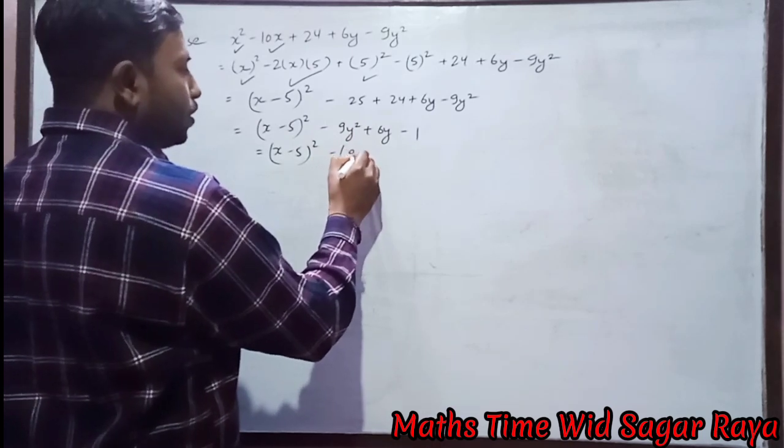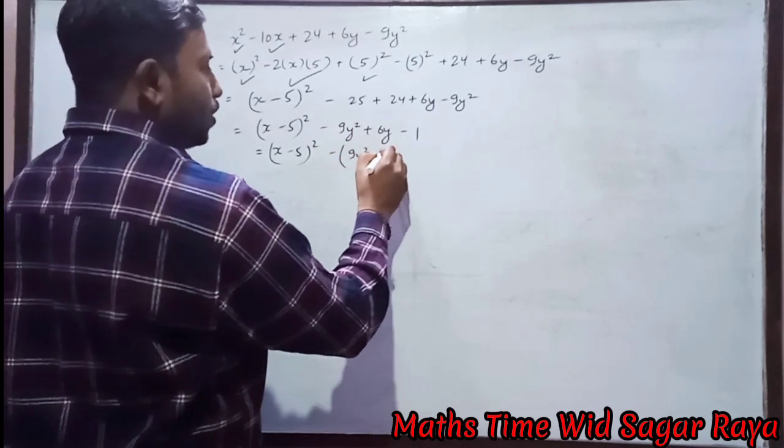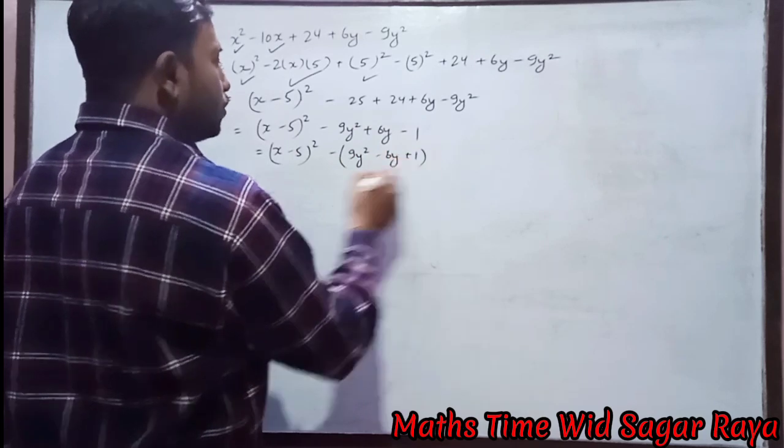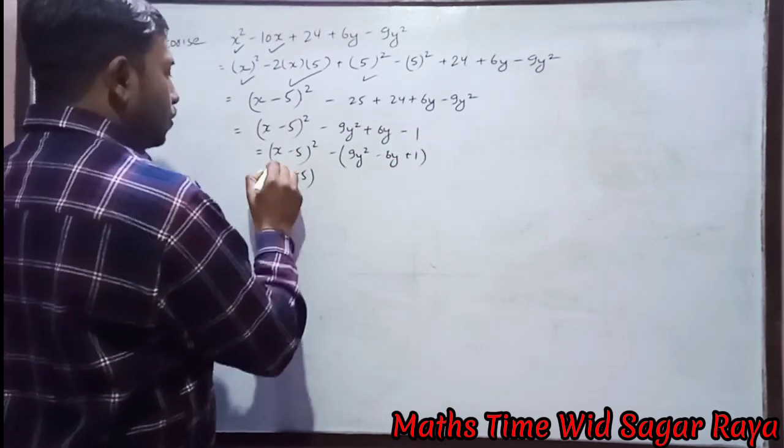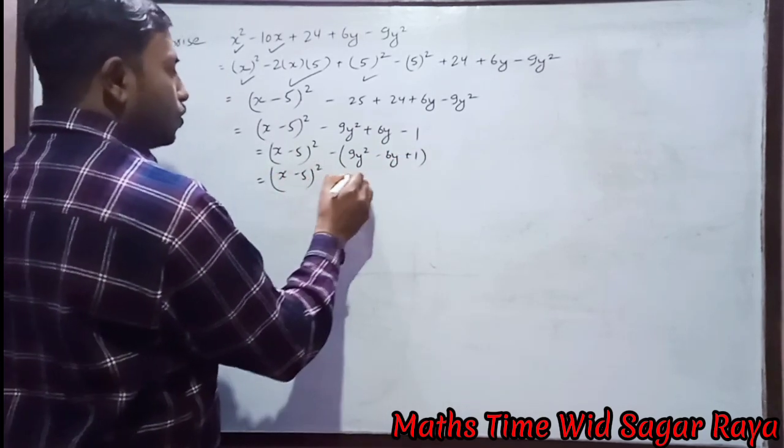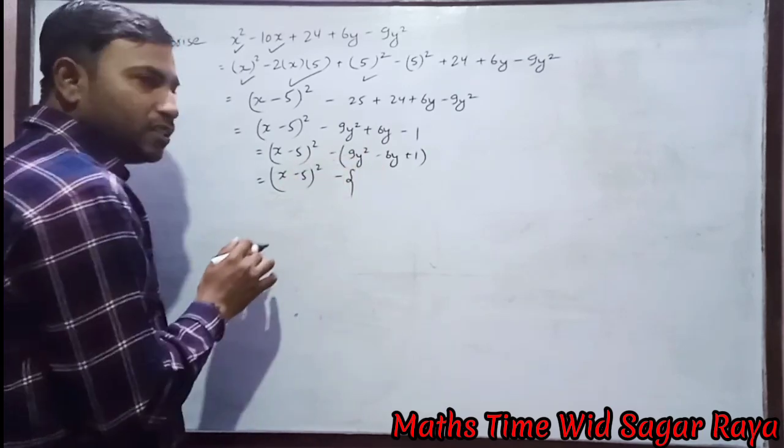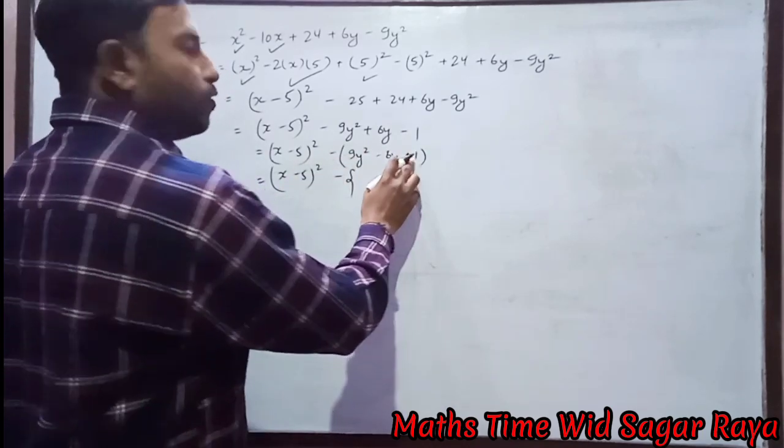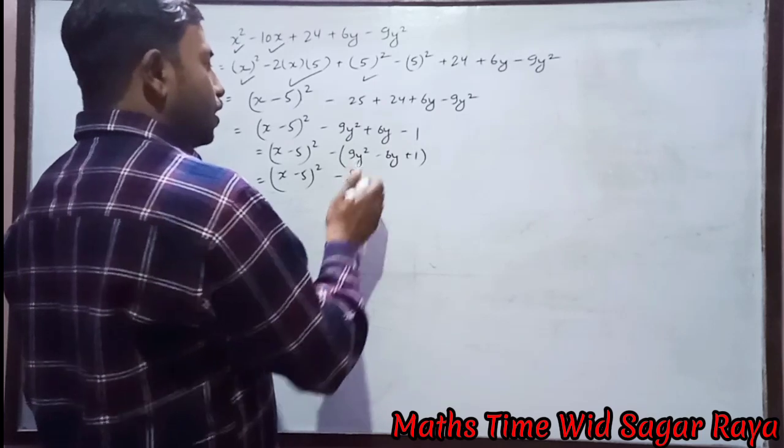Then (x - 5)². Now let's take minus common and it will be 9y² - 6y + 1. Here also, 9y² means (3y)² and square of 1 will be 1² which equals 1.